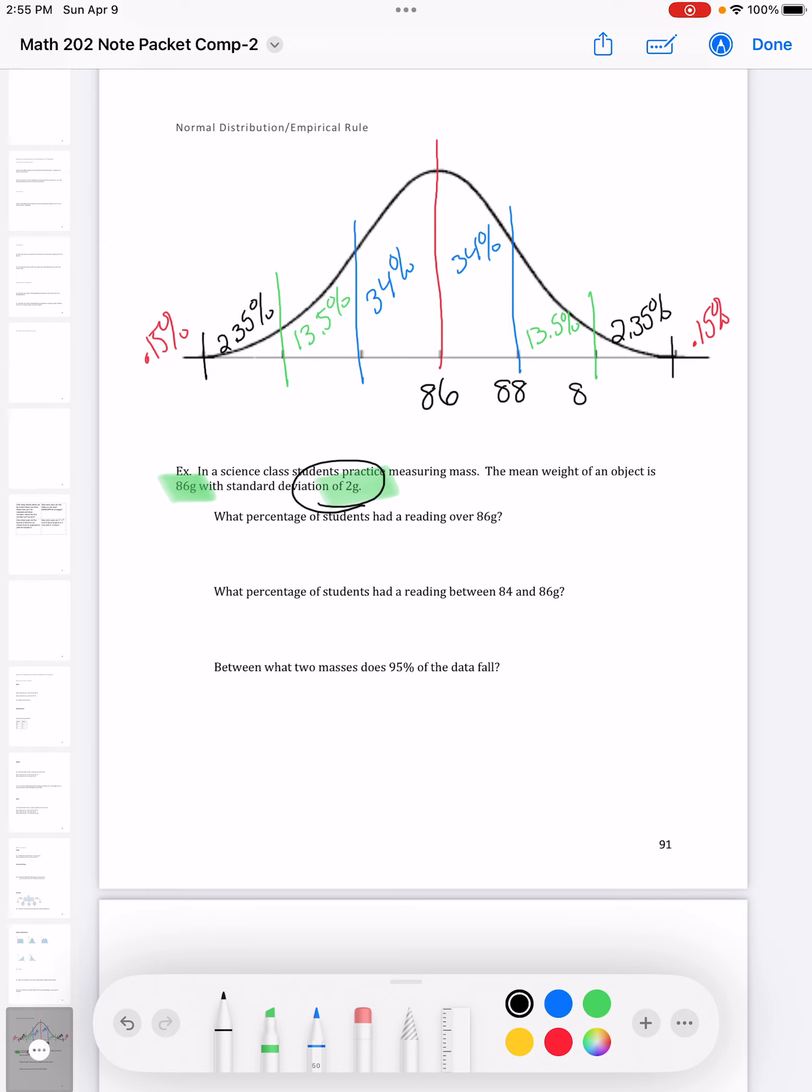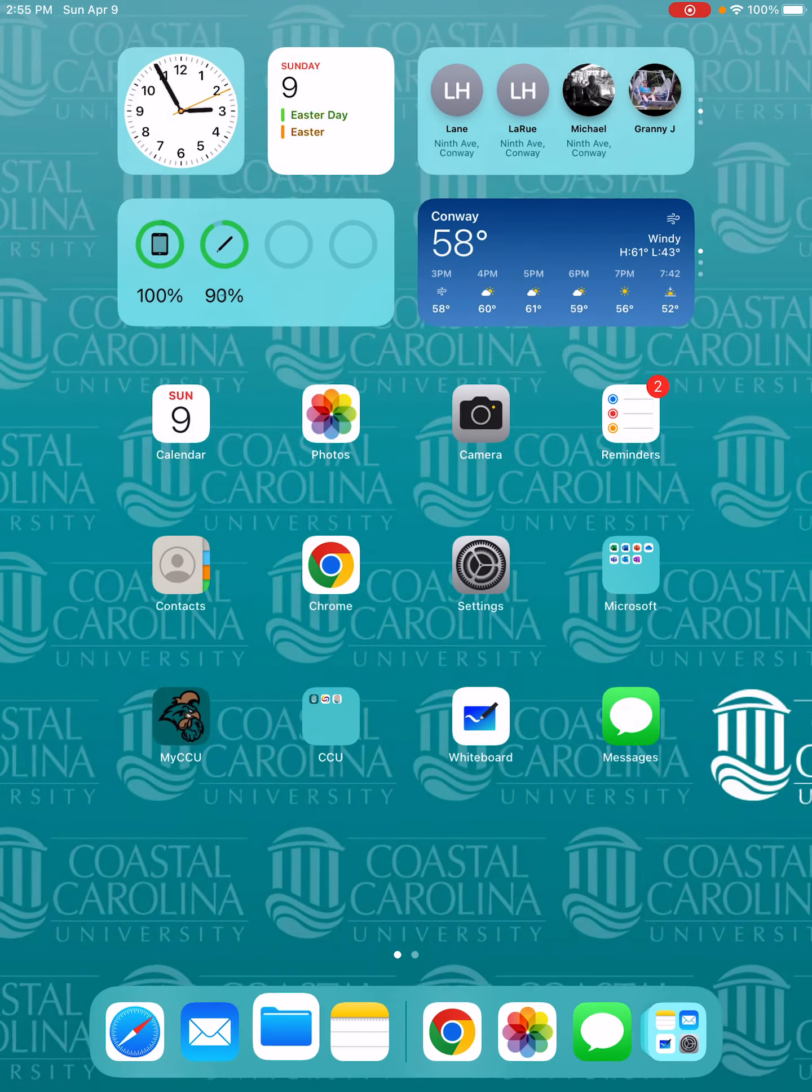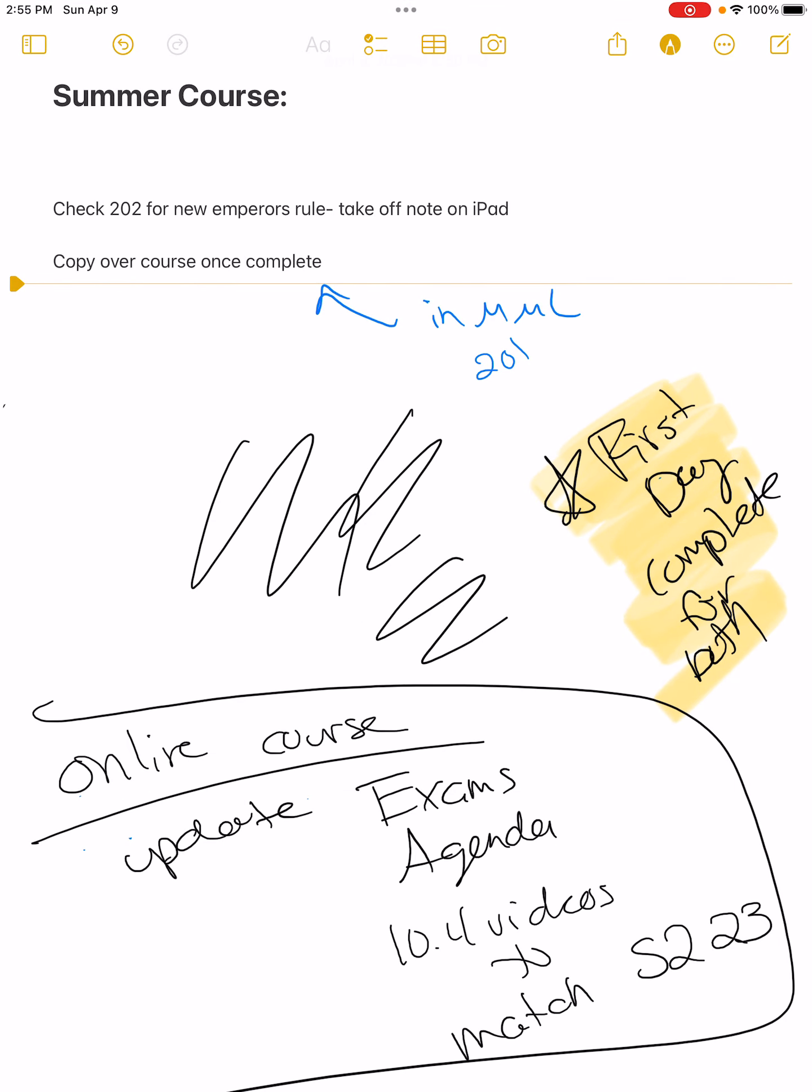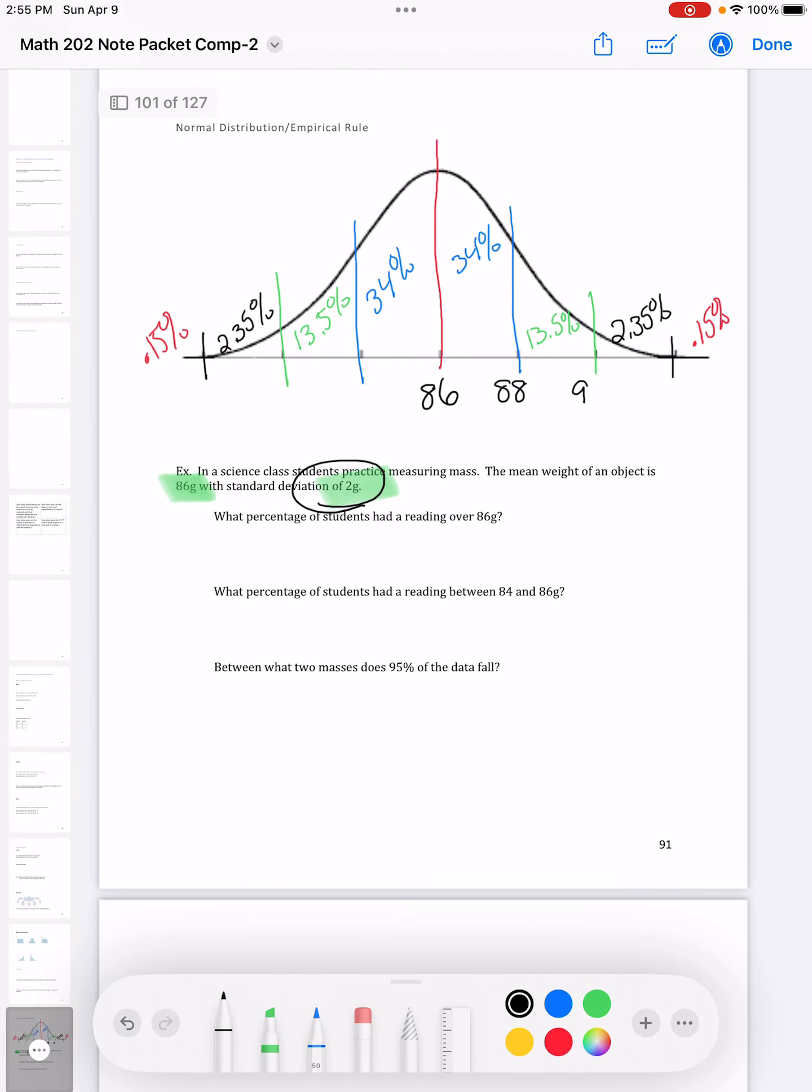To the right is positive, and to the left, we would be subtracting. I'm going to subtract to the left. Once I have this filled out, now I can pop down and answer my questions.